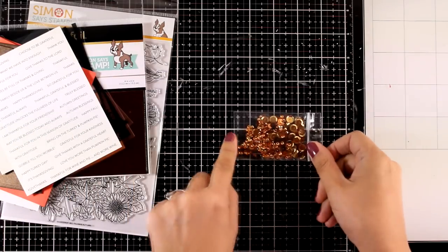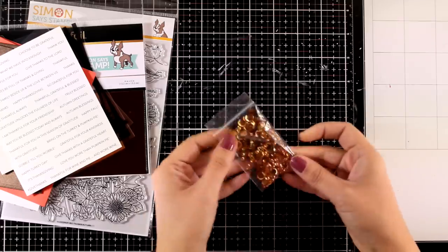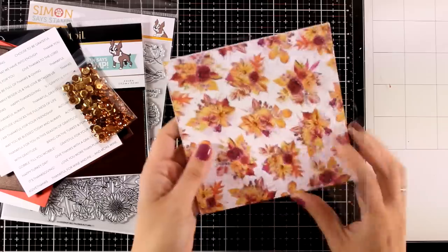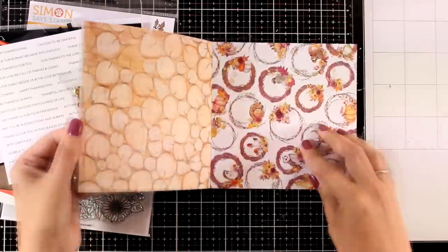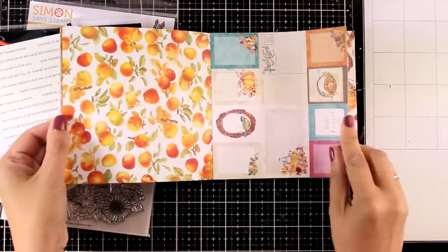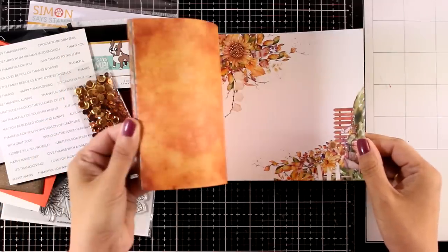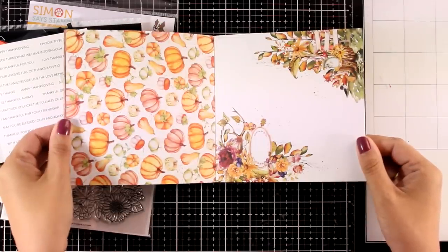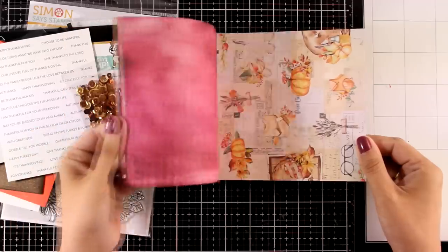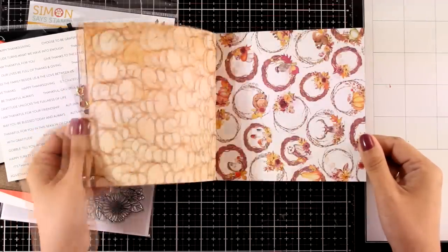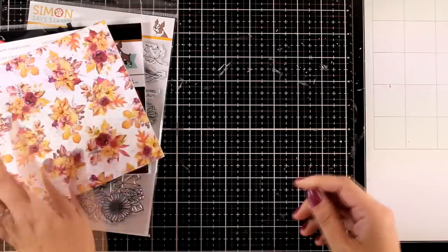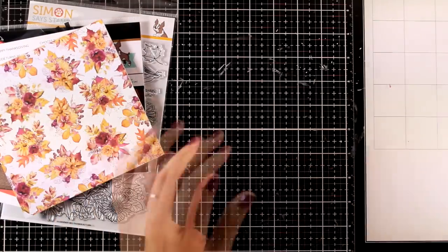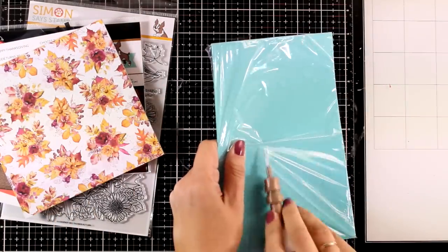Here is a pack of sequins in a lovely copper color in different sizes, really sparkly. And here is the 6x6 paper pad. Now the color combo in this paper pad is absolutely stunning. It's probably my favorite product in this kit. I love the pumpkins and I will be using these ones on my card today. All these papers are double-sided but you get two pages from each design so you can use pretty much front and back.